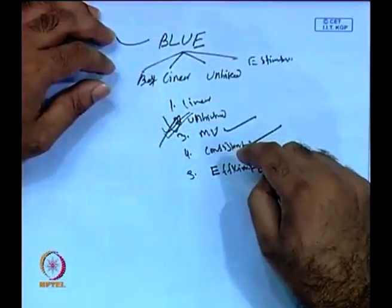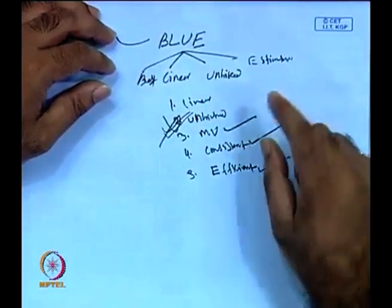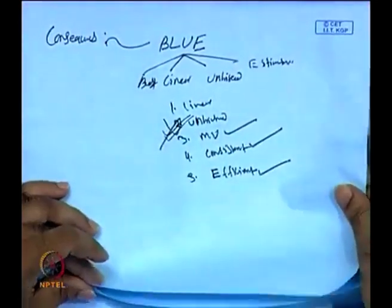If the model does not maintain minimum variance, consistent, and efficient properties, then this model cannot be considered the best and should not be used for forecasting and policy. You need a solution — redesign, reformulate, and restructure until you get a model where all estimated parameters have minimum variance, are unbiased, consistent, and efficient. This is the consequence part of the heteroscedasticity problem.